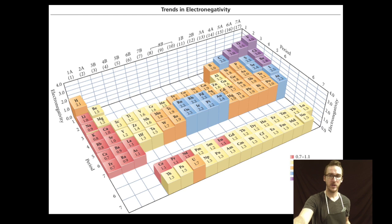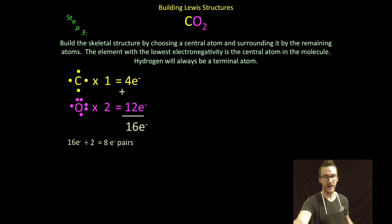Keep in mind, though, when you're using just a standard periodic table, you have to remember the trend in electronegativity. Recognize that your less electronegative elements are going to be more towards the left and the bottom of your periodic table. So we've decided that carbon is going to be my central atom. I'm going to surround it by my remaining atoms, in this case, my two oxygens.